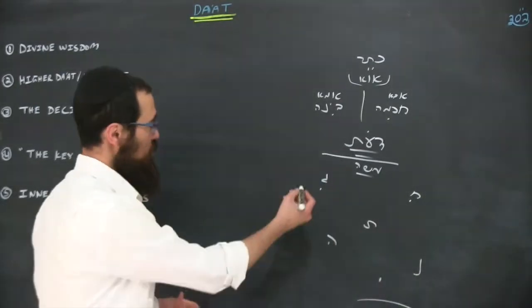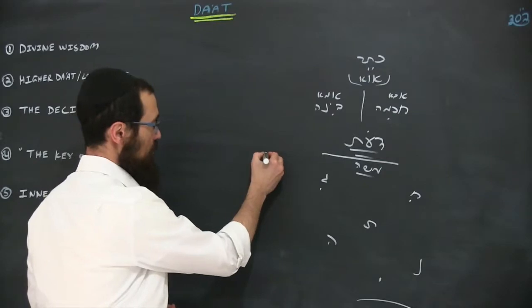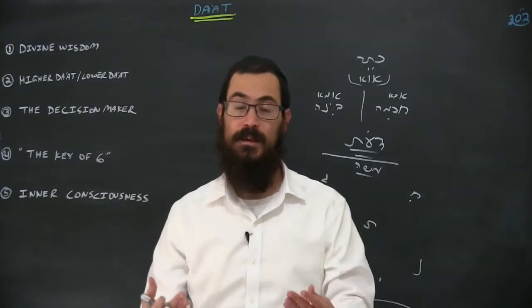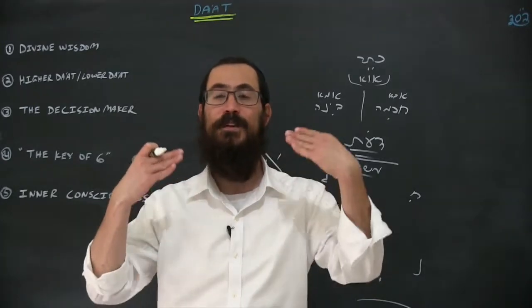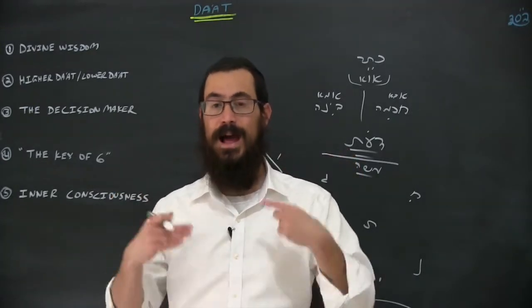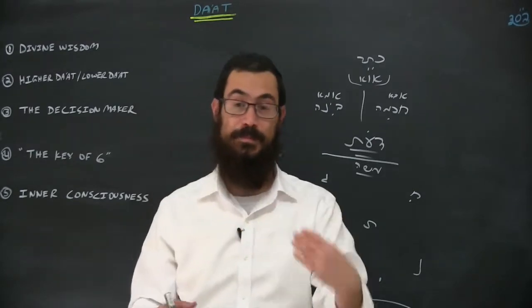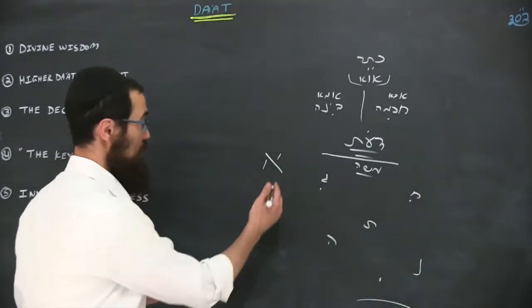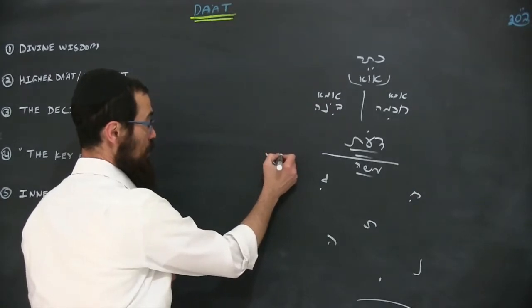So we learn in the books that actually the letter which is compared to dat is the letter Aleph, which is also the letter of learning. Aleph is from the word aluf, to teach. So there's Aleph of Chokhmah, Aleph of Binah, but then really the Aleph puts together these two opposites.